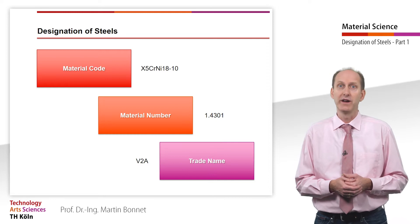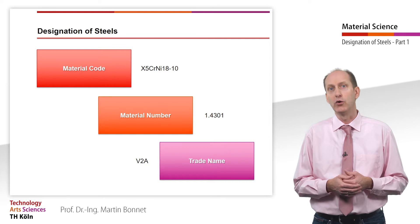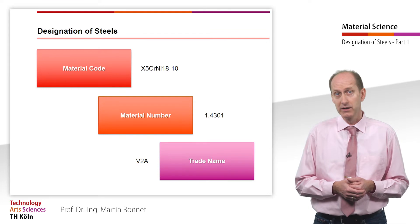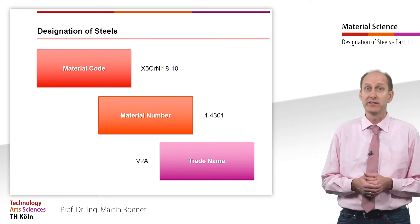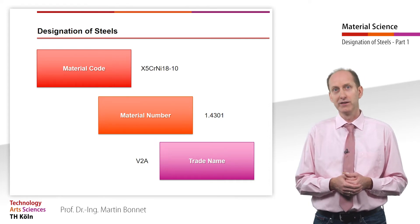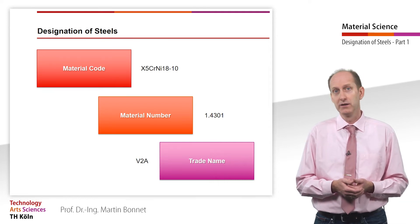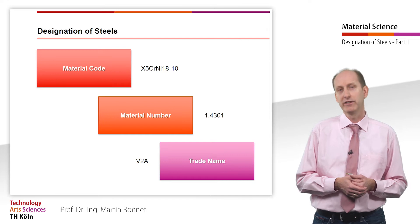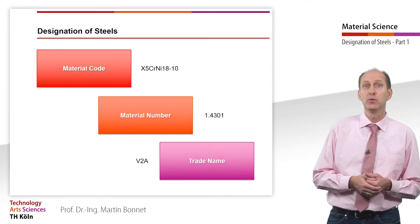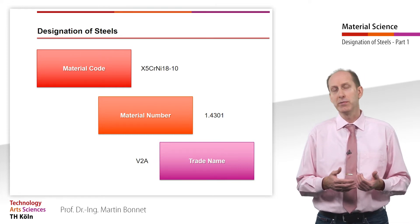Material numbers are more suitable for data processing than the steel names, for steels according to the European Standard EN 10027 Part 1. In addition to these standardized designations, steel makers also use trade names for their products. This means that there are several different names for the same material. This generally applies to metals as well as to plastics. For this reason we need to deal with identification by steel names as well as with identification by material numbers.